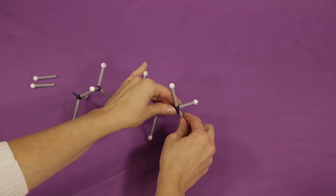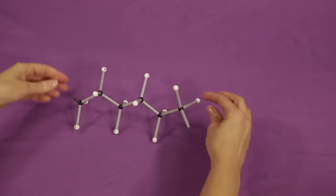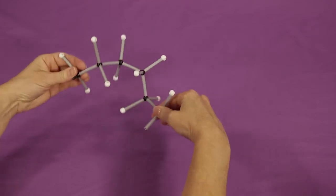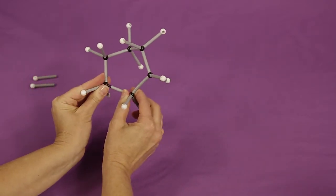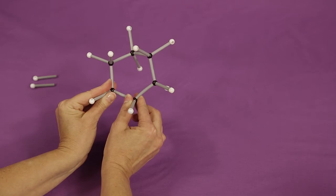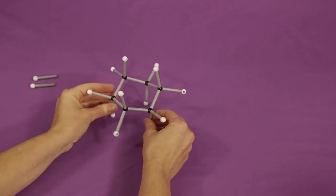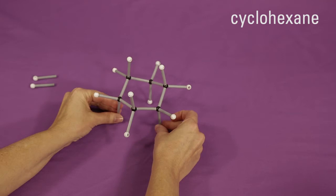Attach a single bond to one of the end carbons. Then, connect the other end carbon to the empty side of the single bond you just attached. The resulting molecule is a cyclohexane.